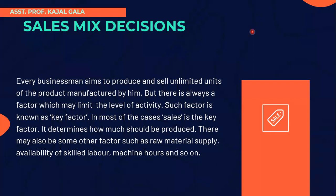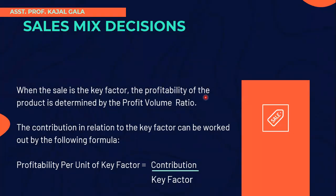In most cases, you will find that sales will be the key factor, because it determines how much should be produced. There may also be other key factors apart from sales — it can be raw material supply, availability of skilled labor, or machine hours. Always remember: when your sale is the key factor, the profitability of a product is always determined by your profit volume ratio.